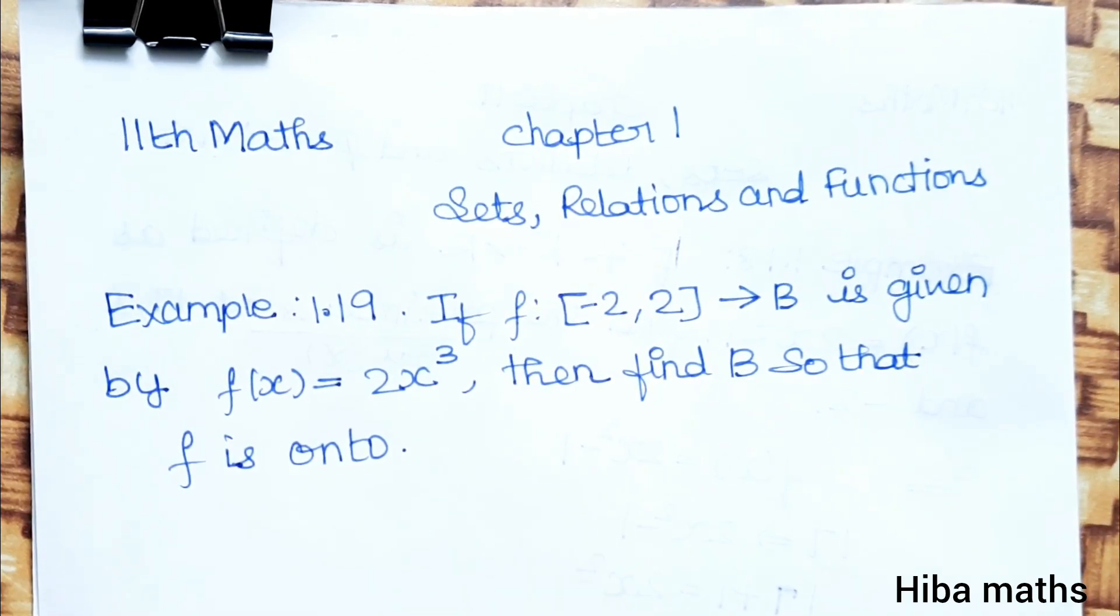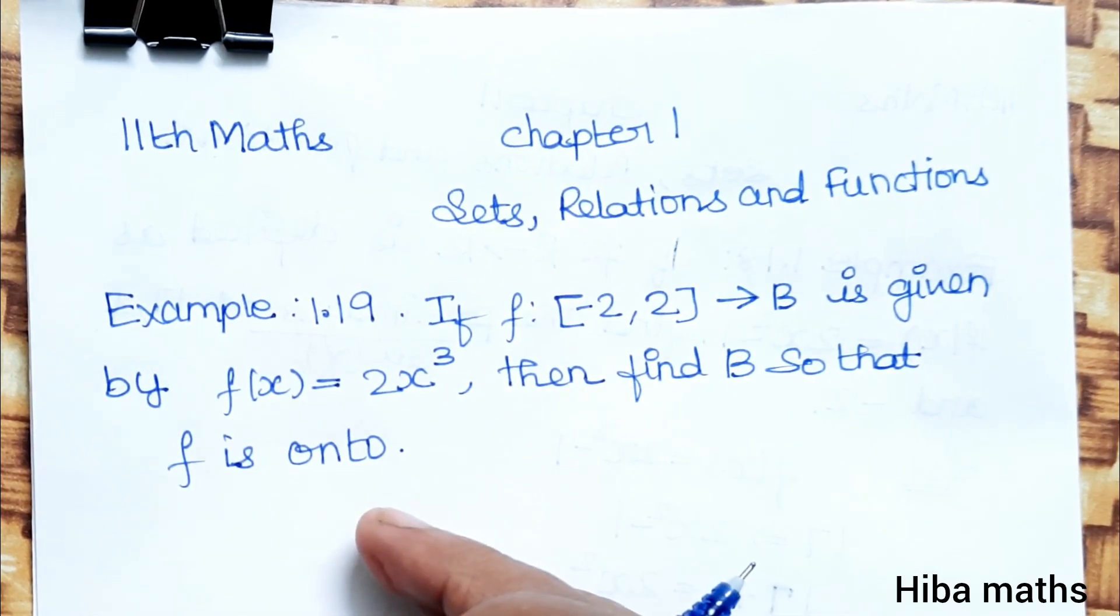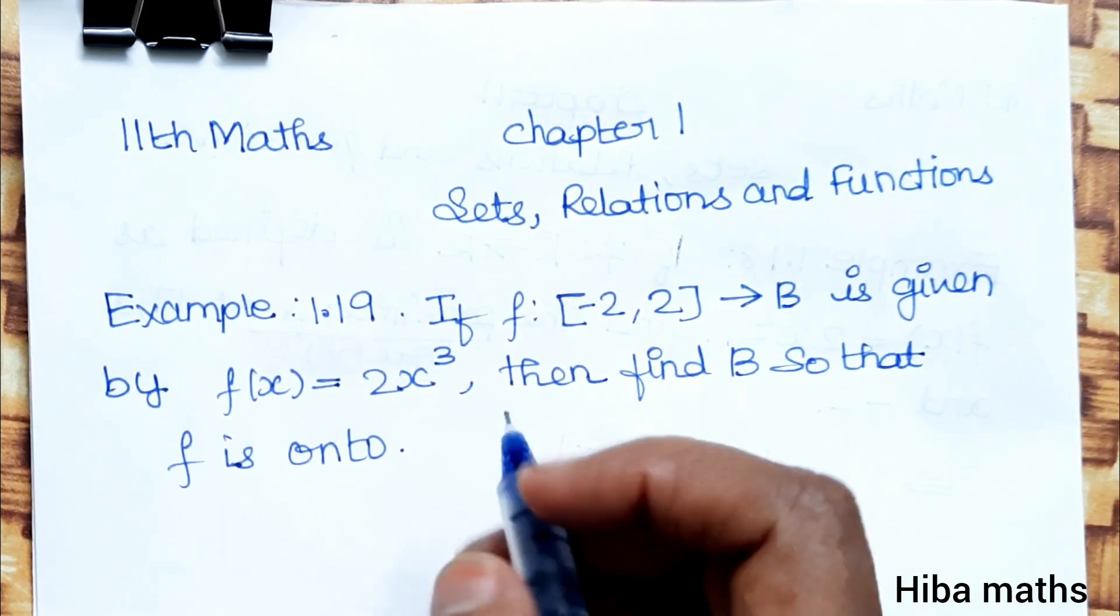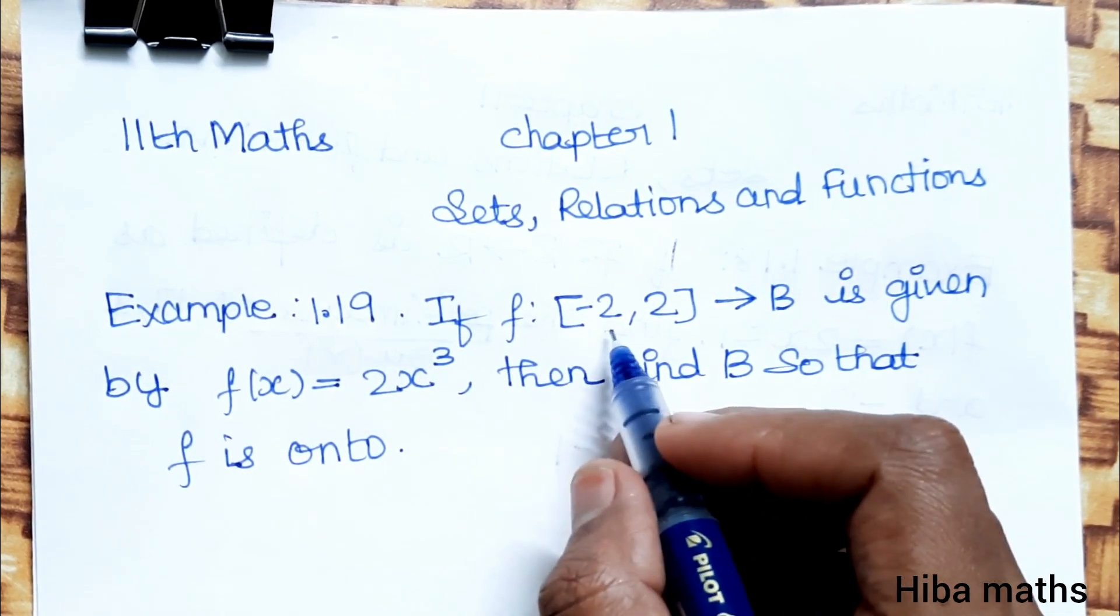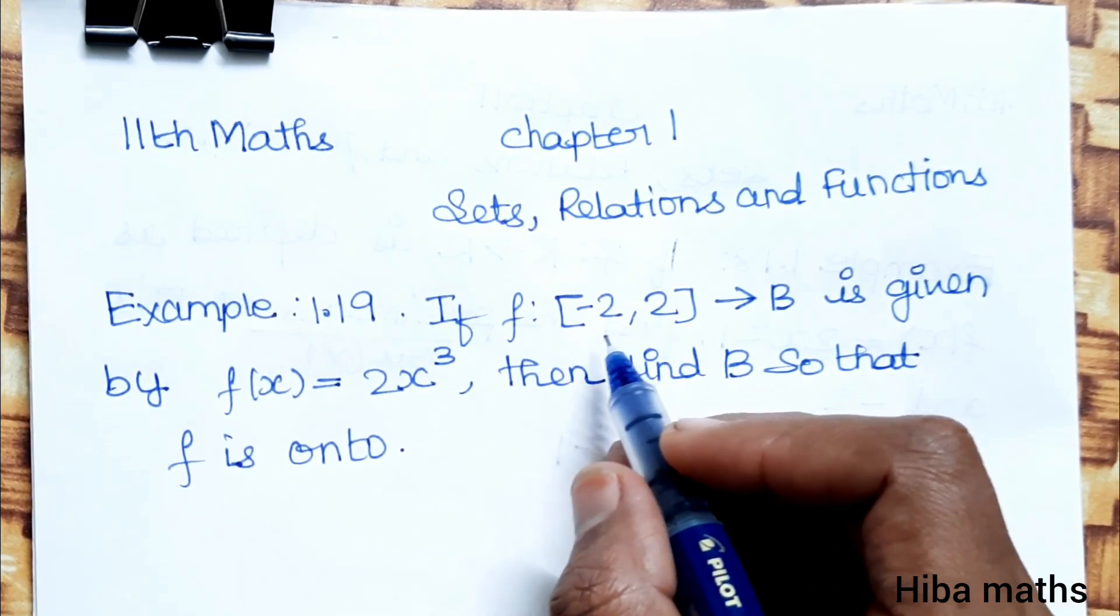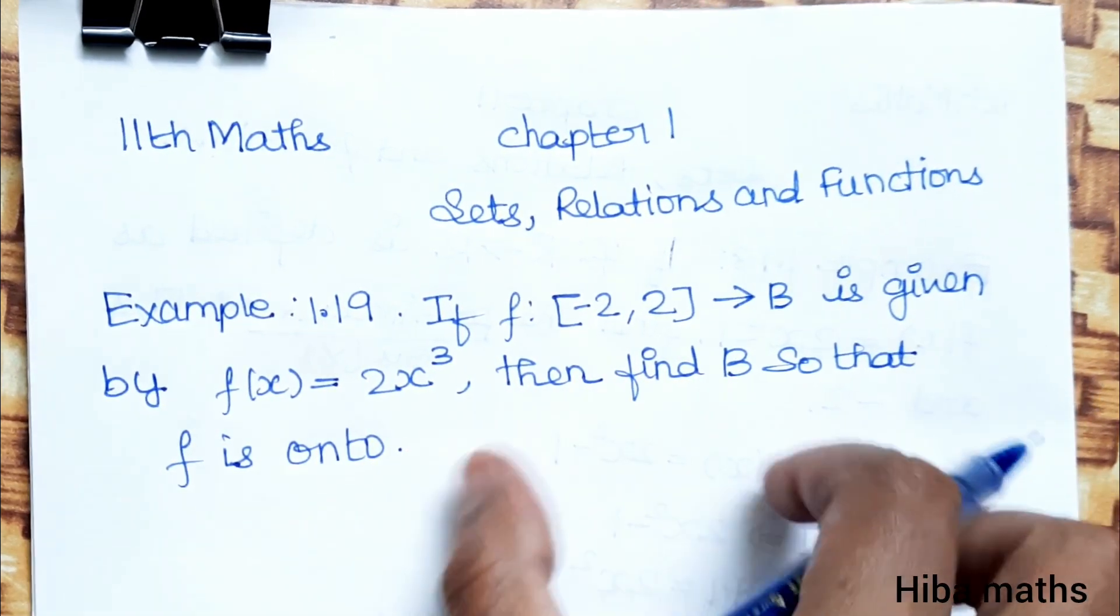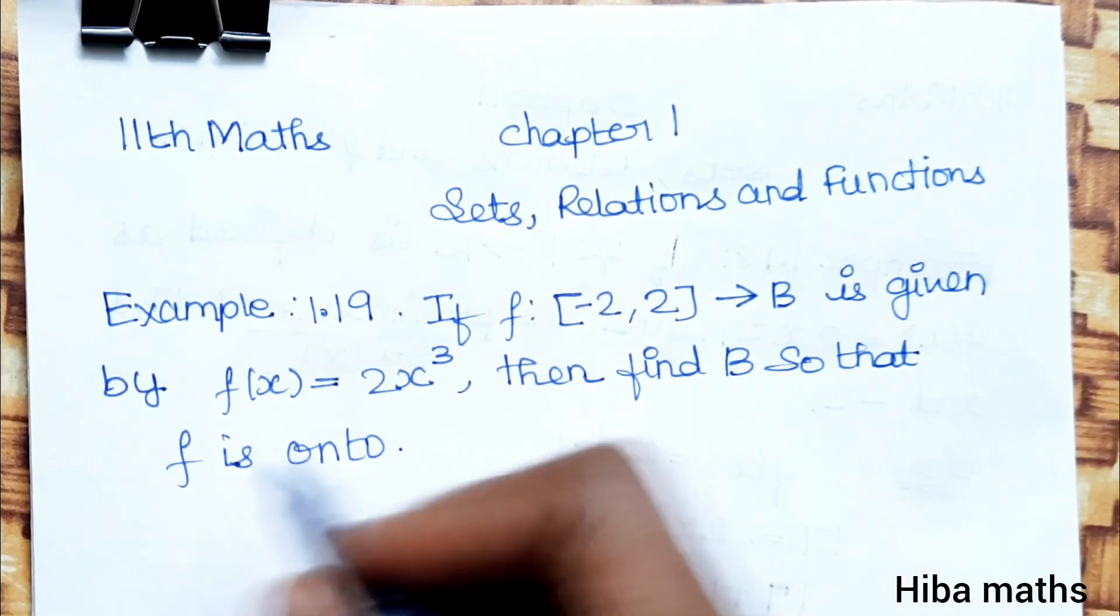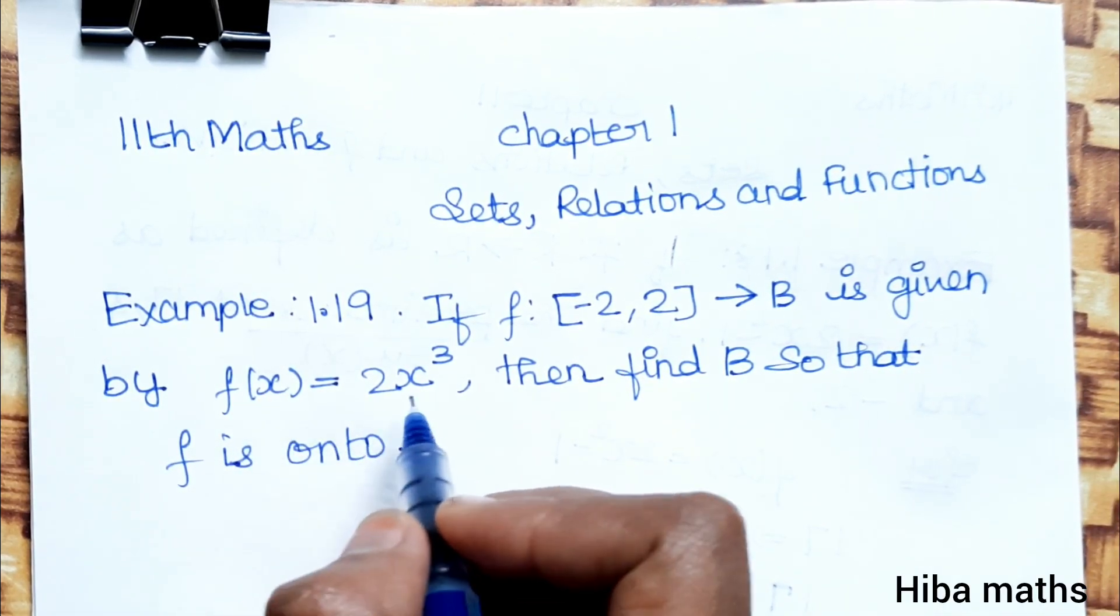Hello students, welcome to Hiba Maths. 11th standard maths, chapter 1: Sets, Relations and Functions. Example 1.19: If function f: [-2, 2] → B is given by f(x) = 2x³, then find B so that f is onto.